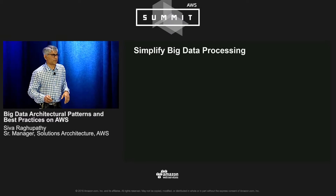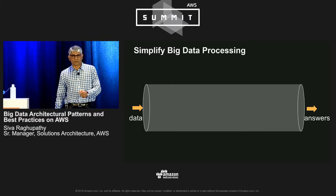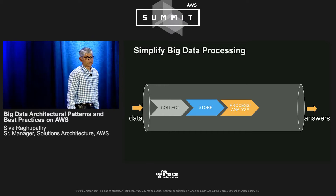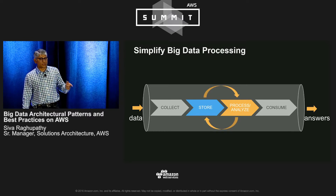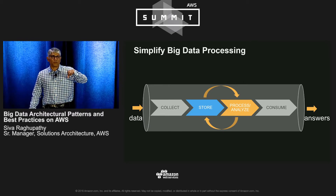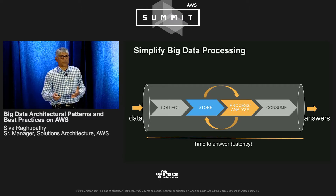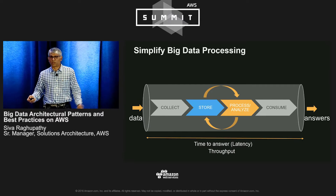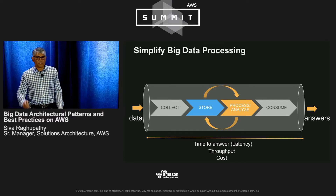Let's simplify big data processing. The more I build big data systems, it looks like a big pipe with data coming in on one side and answers coming out on the other. There are typically multiple stages — collect, store, process, analyze, and consume — with the store and process repeating in multiple cycles. What goes in and what technology you use is often dictated by the time to answer or latency of the pipe, the throughput comprising number of requests per second and payload size, and also cost.